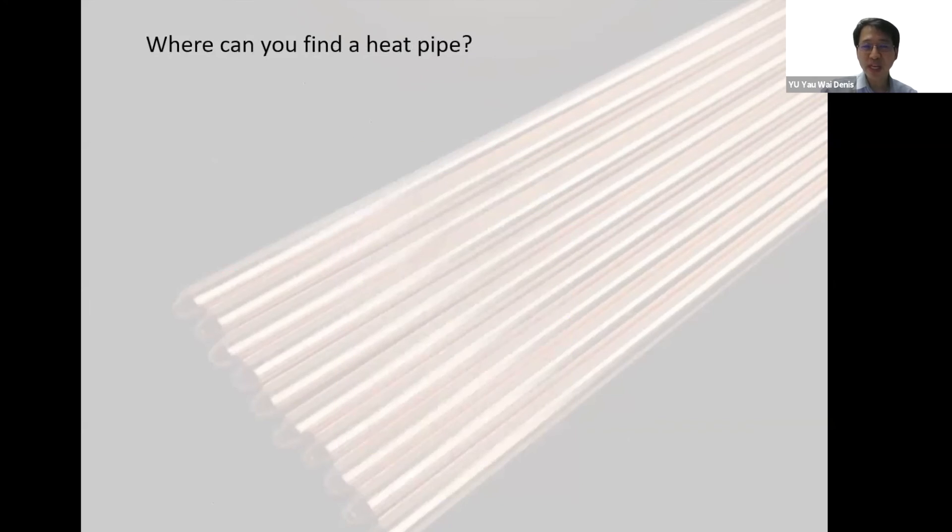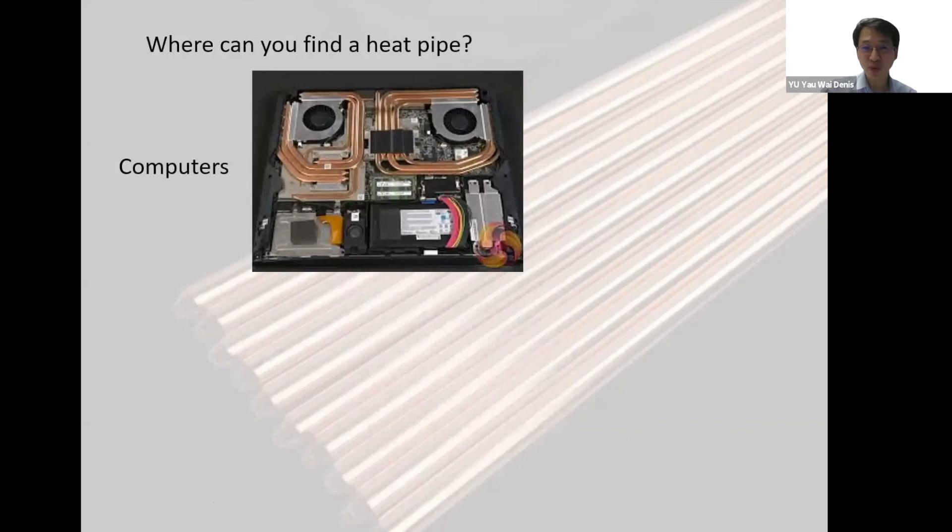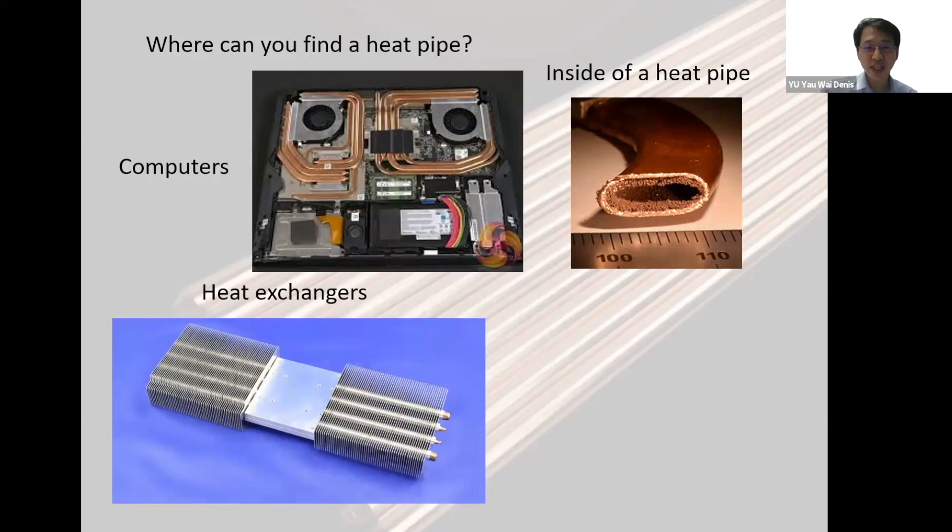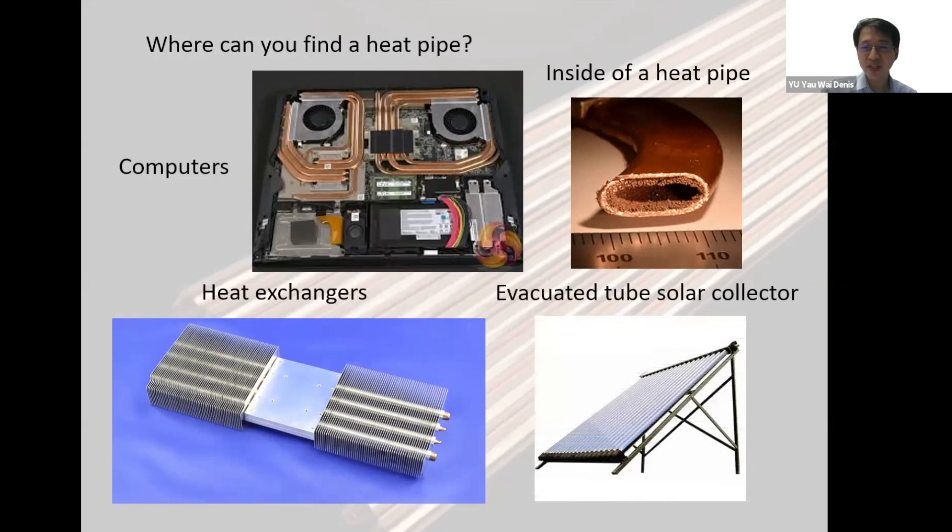We can actually find heat pipe in many applications. For example, in computers when you want to transfer the heat, there are these heat pipes. I want to show you how the inside of the heat pipe looks like. It's just hollow with a little bit of water, which we cannot see. Other places that have heat pipe, for example, heat exchangers for building applications where you want fast heat transfer. You will also see heat pipe in evacuated tube solar collectors. There are many applications to that.